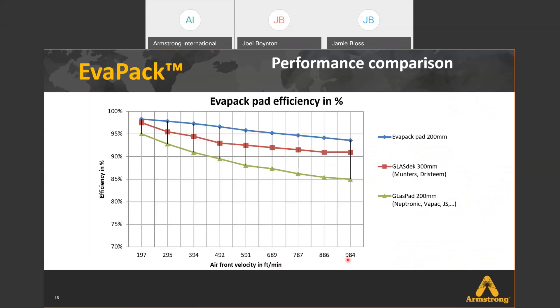Talking about pad efficiency with a performance comparison: on this efficiency chart, the y-axis shows efficiency in percentage and the x-axis shows velocities. Starting at a very low velocity, the efficiencies between glass deck media, glass pad media, and our EVAPAC media are pretty close. But as you increase velocity, the efficiencies drastically decrease in the two competitors. Also notable: while the competitors may hang in there a little, they are using a 300 millimeter pad compared to EVAPAC's 200 millimeter pad.